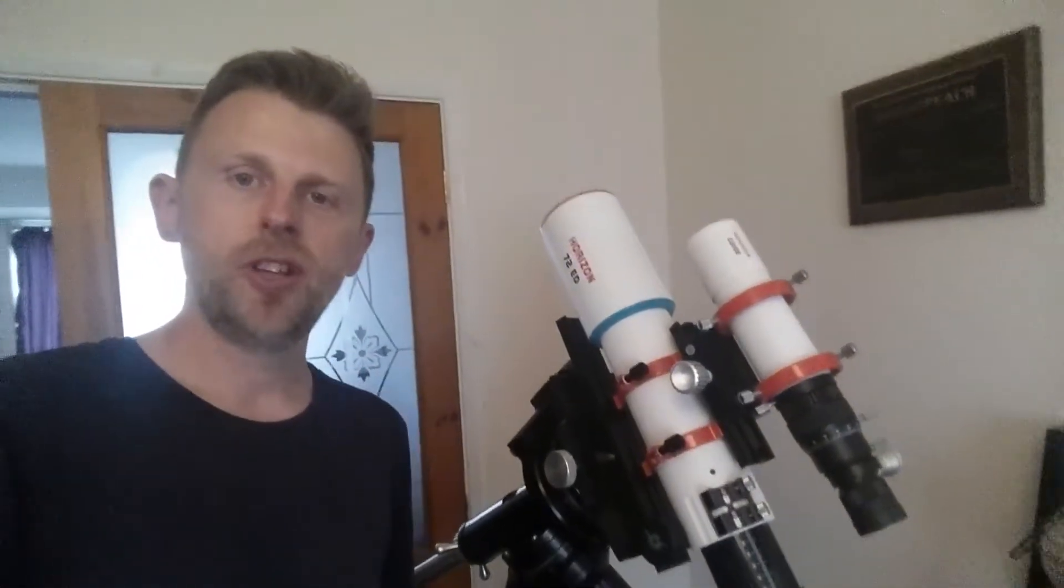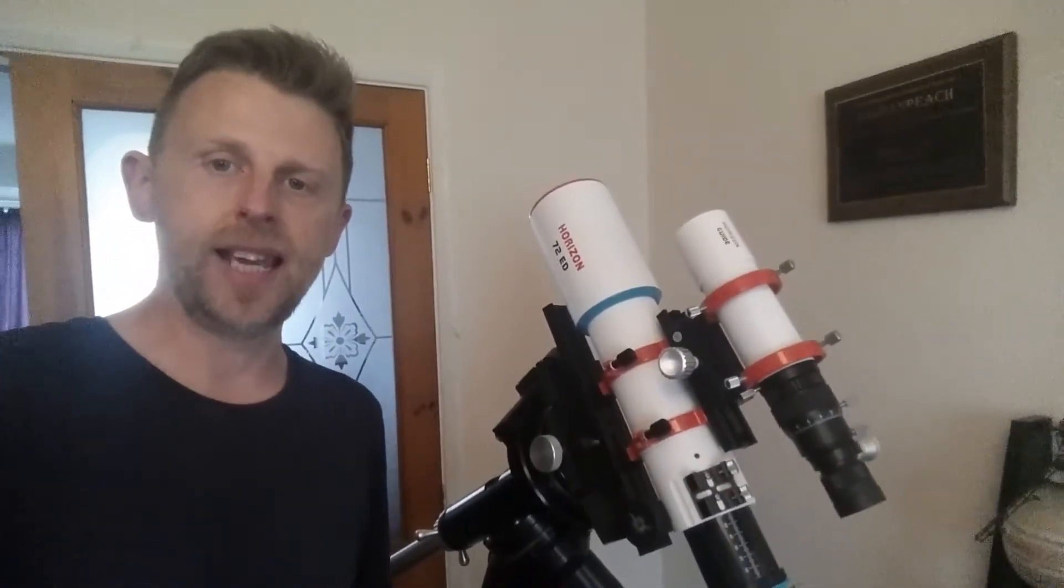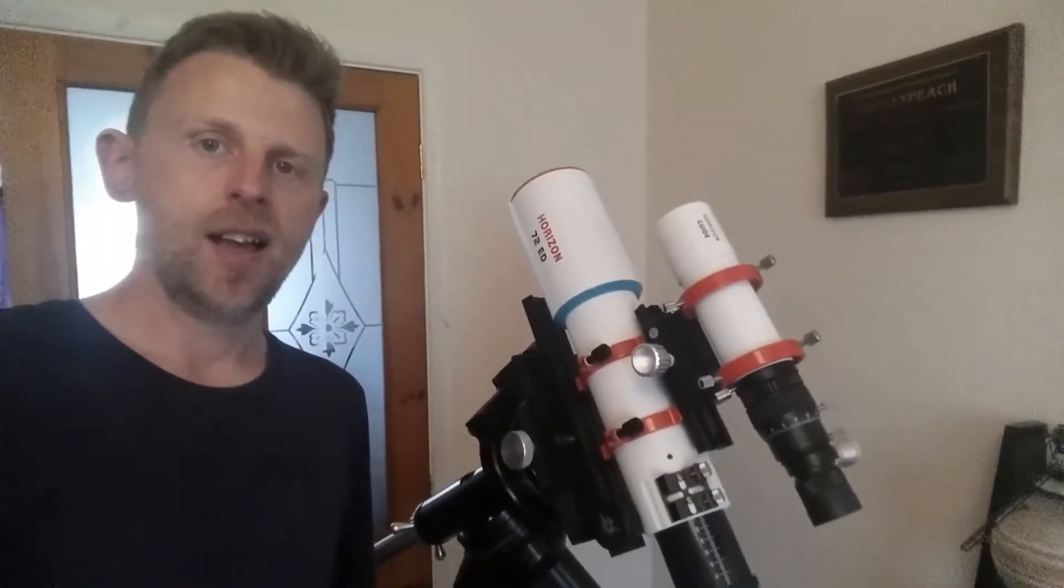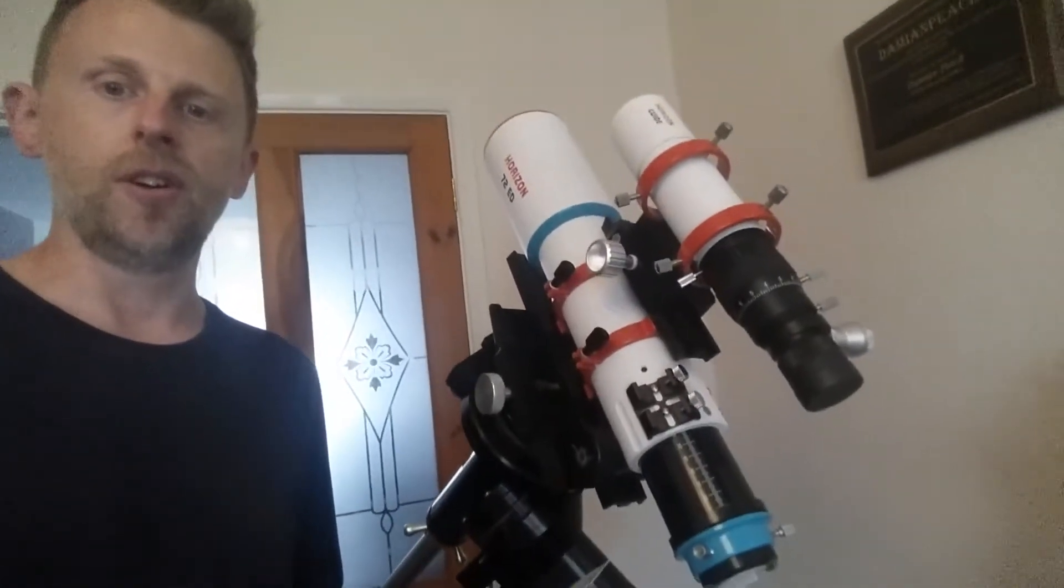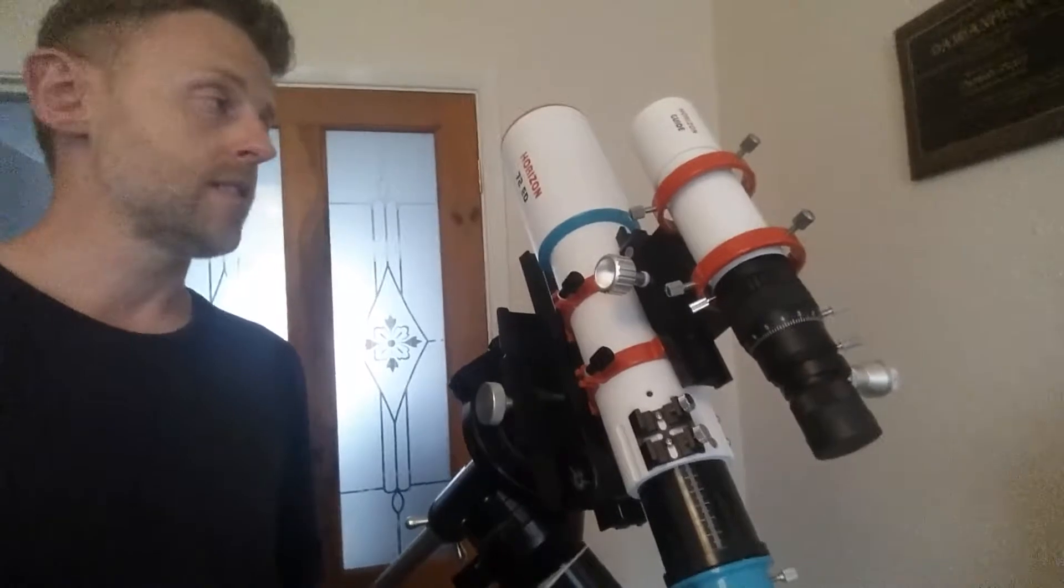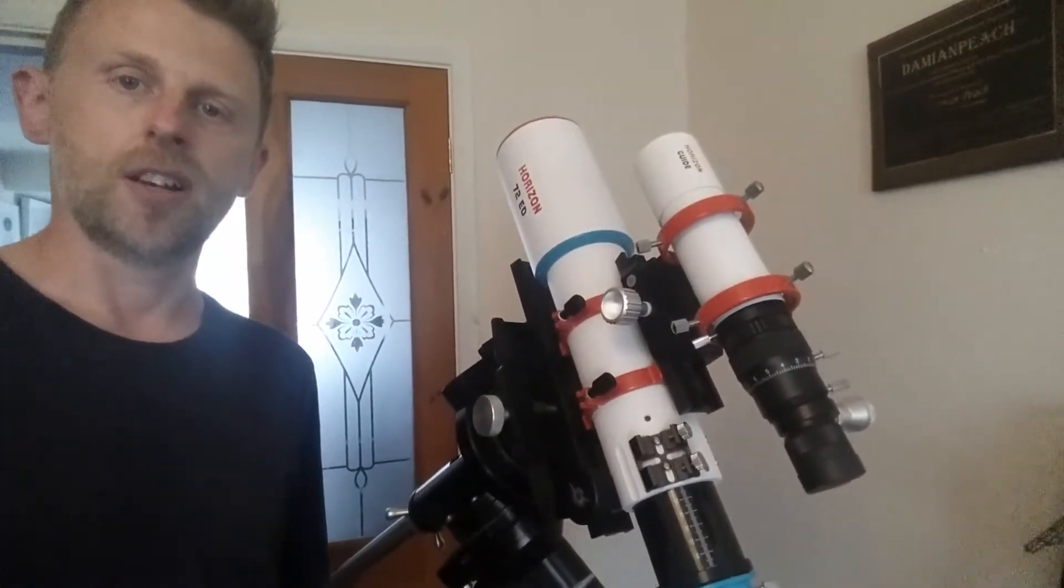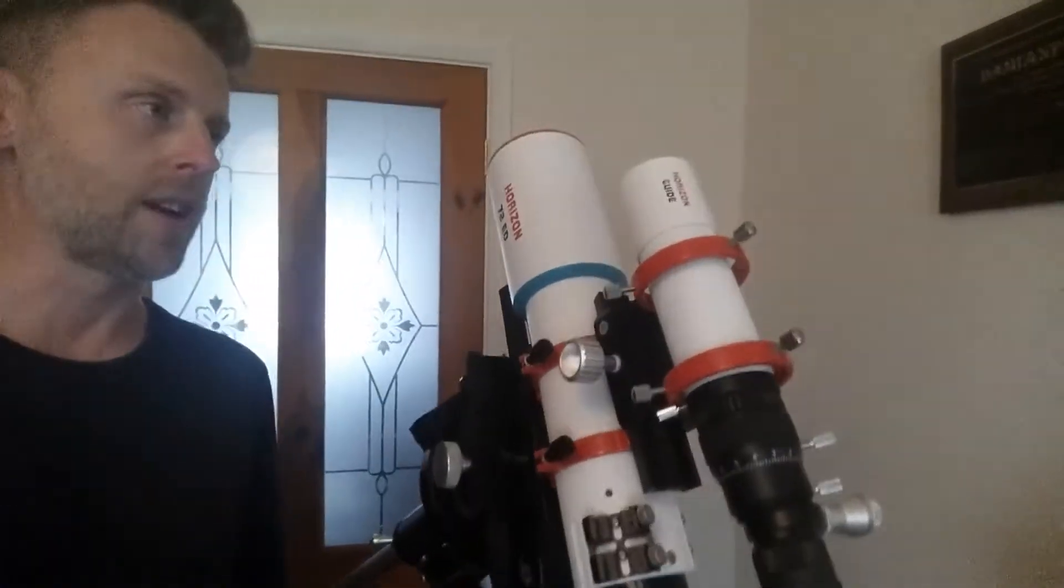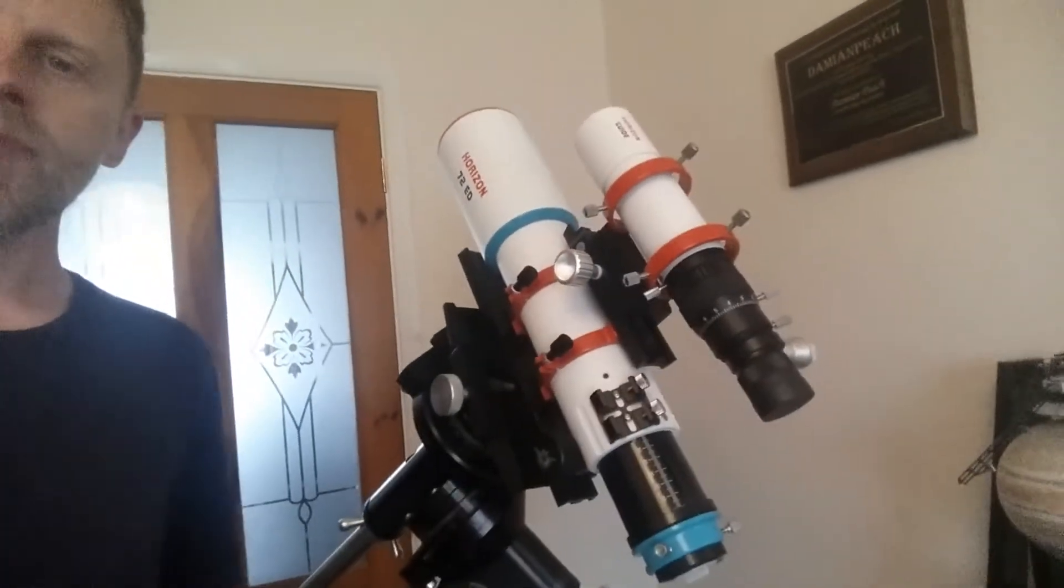Hi there, welcome to this review of the Rother Valley Optics Horizon 72ED refractor. You can see here I've got the refractor mounted on a mount. It's a 72mm ED Apo F6, so pretty fast, and it also comes with a nice 50mm guide scope fitted.